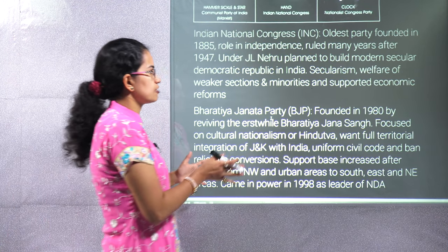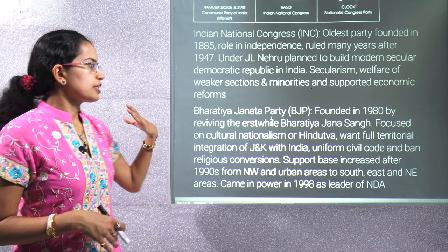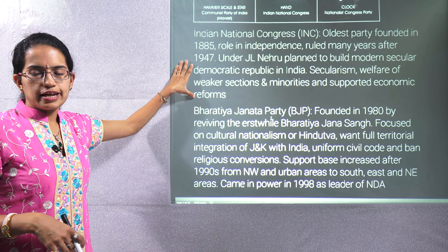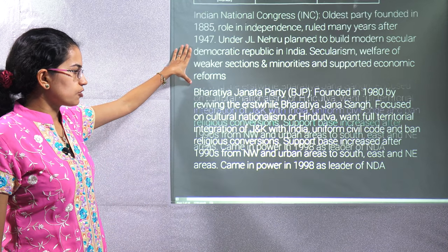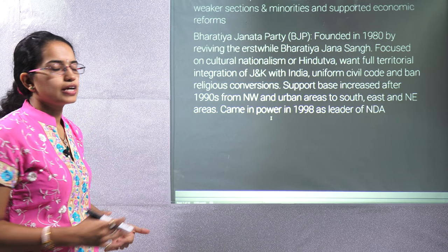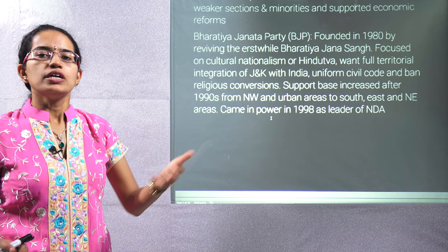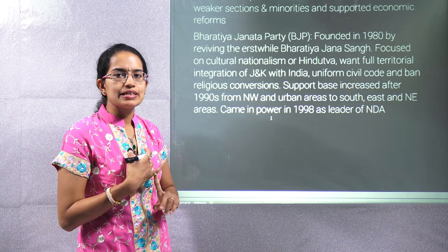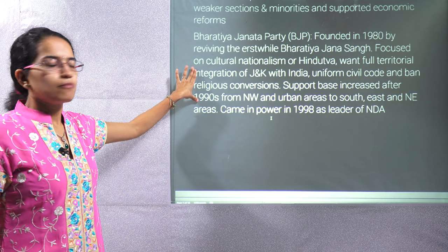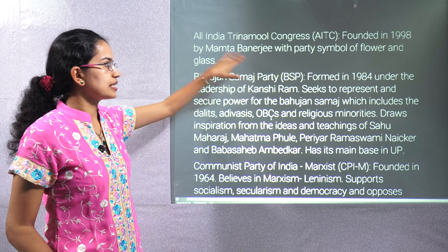The NCERT lists six national parties, but as of 2018 there are seven. The first is the Indian National Congress, the oldest party, established in 1885, with ideologies of secularism, welfare of weaker sections and minorities, and support for economic reforms. Under Jawaharlal Nehru, huge developments were brought about. The Bharatiya Janata Party, or BJP, founded in 1980 (originally named Bharatiya Jana Sangh), advocates territorial integration of Jammu & Kashmir, banning religious conversions, and a uniform civil code.